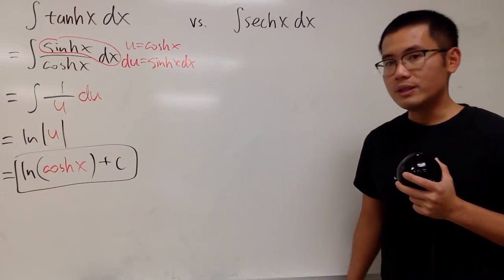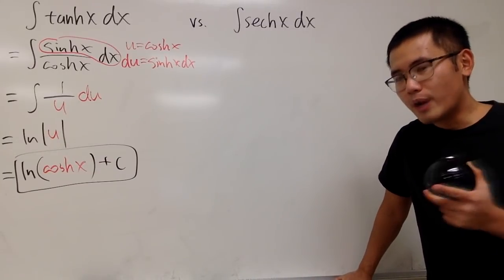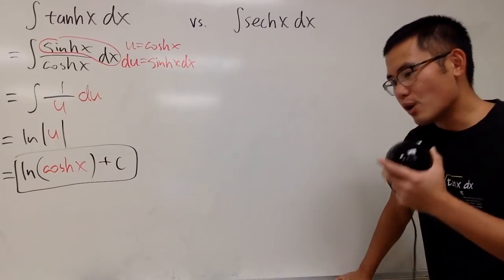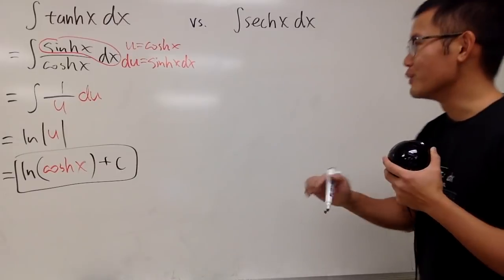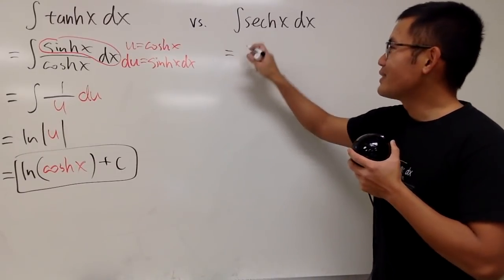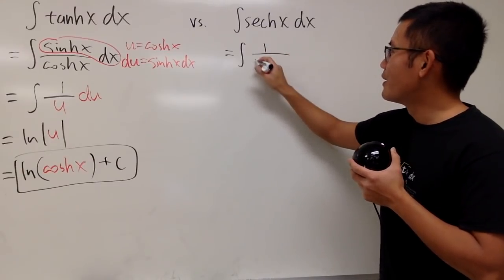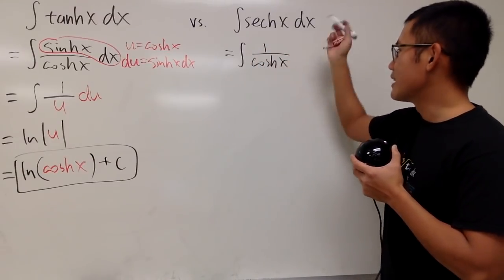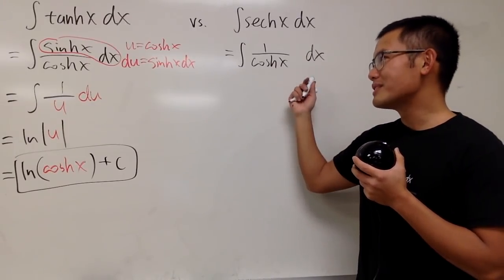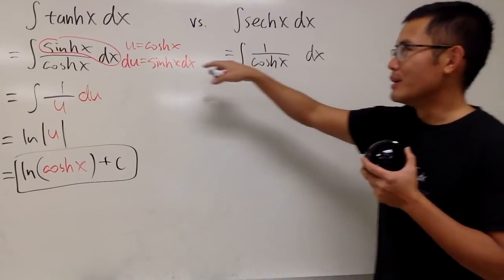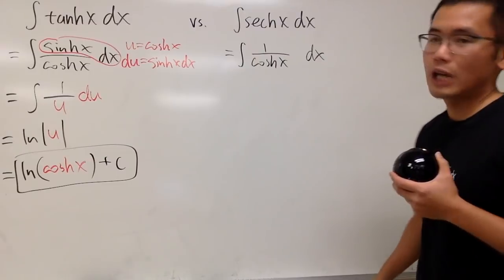Now let's look at the hyperbolic version of the secant. You might want to try it the way you do the integral of secant x, but for this one, we're going to approach it differently. The hyperbolic secant is just 1 over cosh x dx. The problem with this one is that we do not have sinh x on top to help us out, so do not try to do u-sub right now. It's not going to help yet.